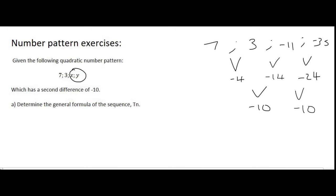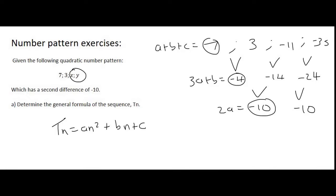Perfect. So, now, question A wants us just to work out the general formula. Remember for a quadratic pattern, it's an squared plus bn plus c. We said that 2a is always equal to this number. 3a plus b equals this number. And a plus b plus c equals this number.